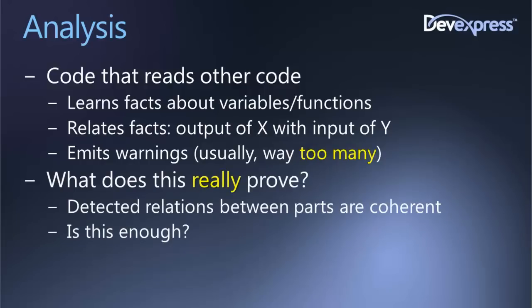For example, the static analyzer knows that the output of variable X is going to be the input of function Y, and it can relate the two things — making logical calculations and emitting warnings if it finds incoherent or inconsistent input being passed to a function. Usually a static analyzer emits way too many warnings — sometimes so many that the developer feels authorized to ignore all of them. What does an analyzer really prove? It proves that detected relations between parts are coherent. Is this enough? Not necessarily. The analyzer gives you stronger, more relevant information than a unit test. Because the analyzer acts as a big brother — if competently programmed, it's absolutely honest. Unit tests instead are written by developers for themselves, and humans are not like computers, even with the best intentions.